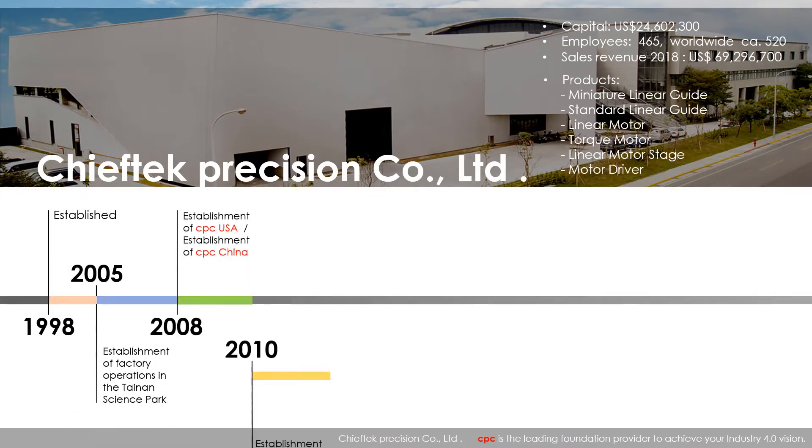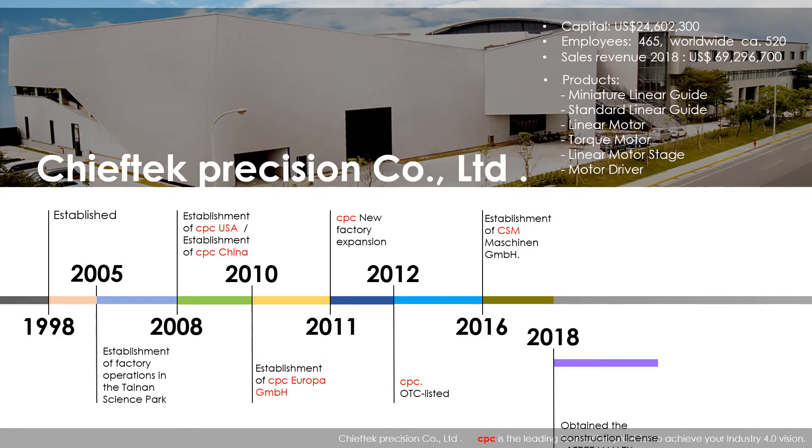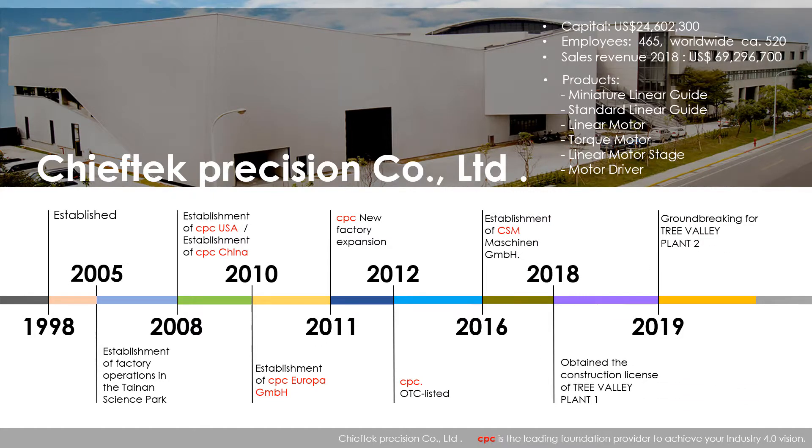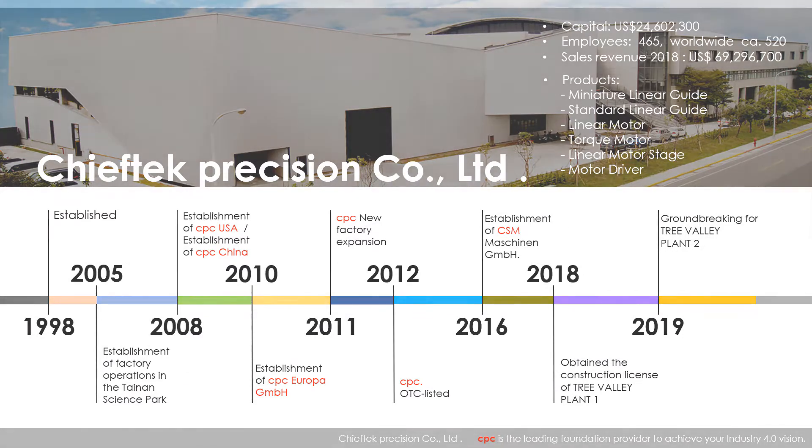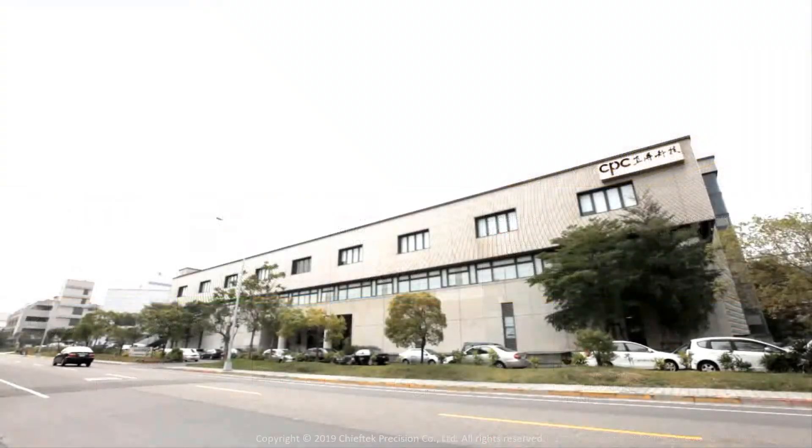Founded in 1998, Chief Tech Precision, or CPC, from the very beginning has been dedicated to the research and development, design, and manufacture of miniature linear motion components. Over the years, linear motion products have rapidly evolved and are now utilized in a diverse array of applications for precision automation equipment.